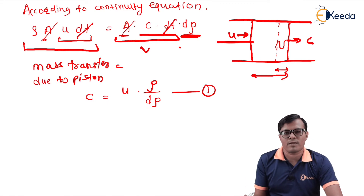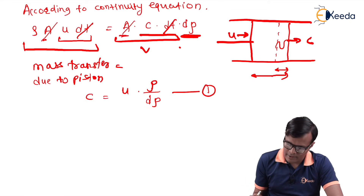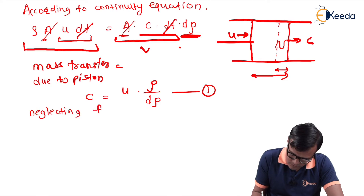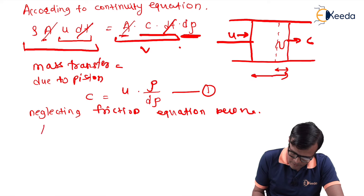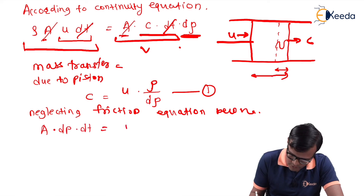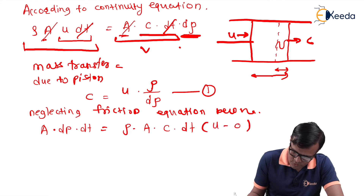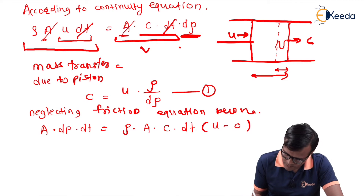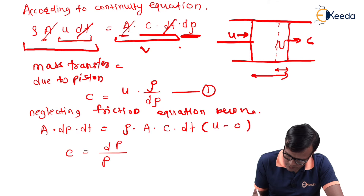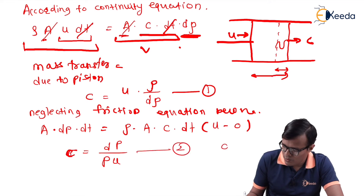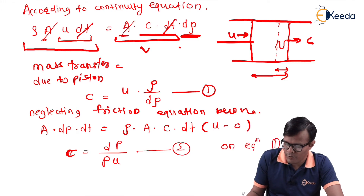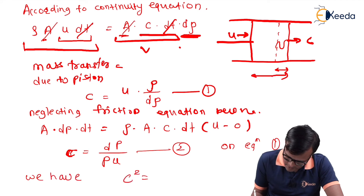Neglecting frictional losses for a very small system, the momentum equation becomes A·dp·dt = ρ·A·C·dt·U, where the velocity change is from U to 0. Rearranging gives equation 2: C = dp/(ρ·U). Combining equation 1 and equation 2, we have C² = dp/dρ.